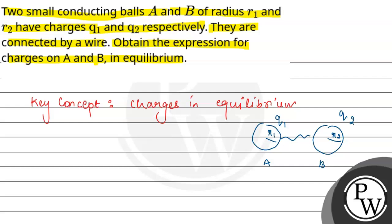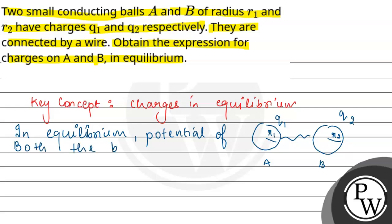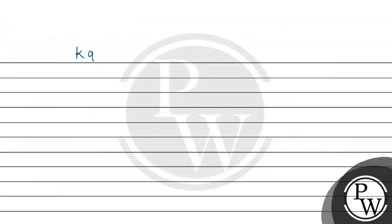When will the potential be the same? In equilibrium, the potential of both balls will be the same. We assume that in equilibrium, ball A has charge QA and ball B has charge QB. So the potential of A equals K·QA/R1 and potential of B equals K·QB/R2. Since K cancels, QA/QB equals R1/R2.